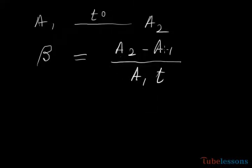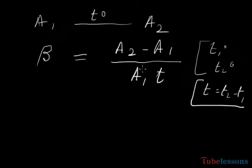The increment of area is A2 minus A1, the initial area is A1, and T degrees is the increment of temperature. It may also be written as T2 minus T1. If T1 is the initial temperature and T2 is the final temperature, then T equals T2 minus T1.